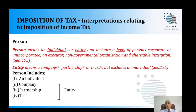Person is defined in section 195. It says: 'person means an individual or entity and includes a body of persons corporate or unincorporated, an executor, non-governmental organization, and charitable institution.' Entity is also defined in section 195 to say: 'entity means a company, partnership, or a trust.' By reading these two definitions, we can summarize that there are four persons in the definition: an individual, a company, a partnership, and a trust.